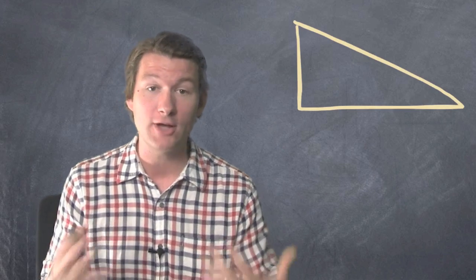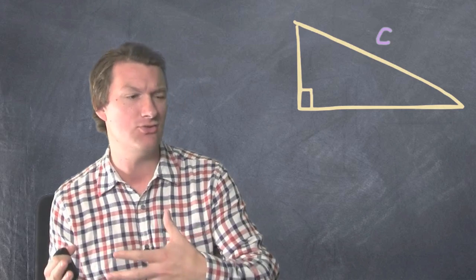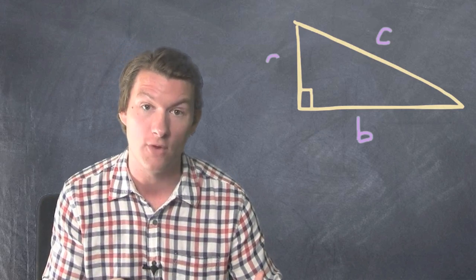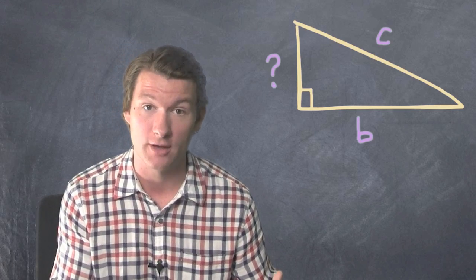How do you use the Pythagorean Theorem if you've got a right triangle and you know the hypotenuse and one of the legs but you're searching for that other leg? I'll show you.